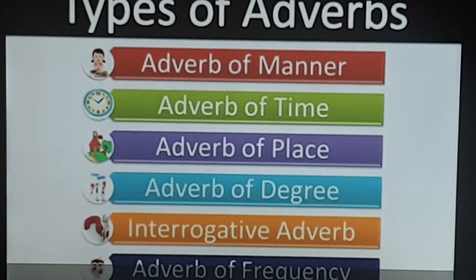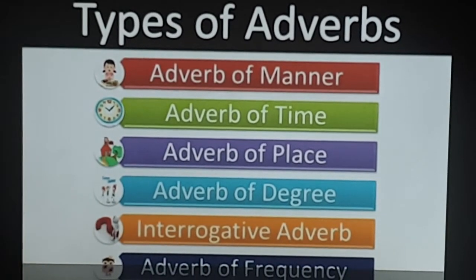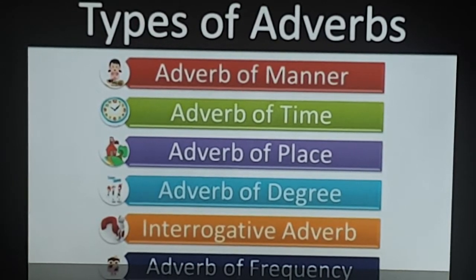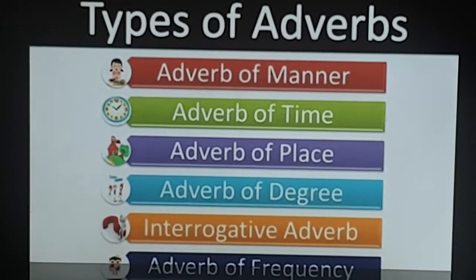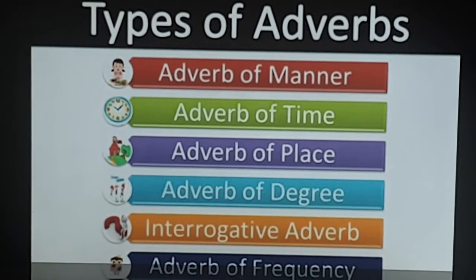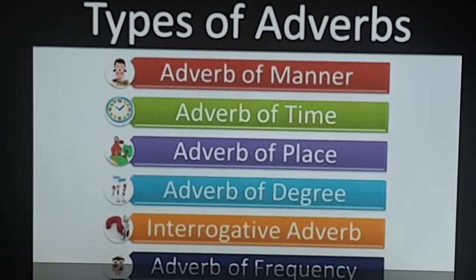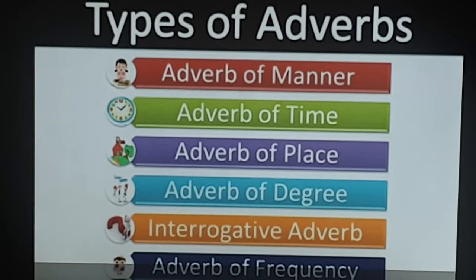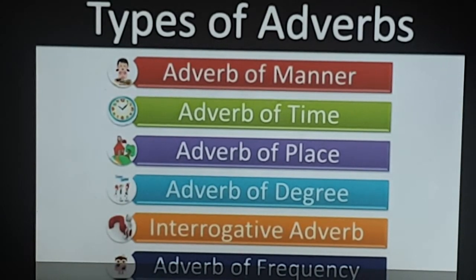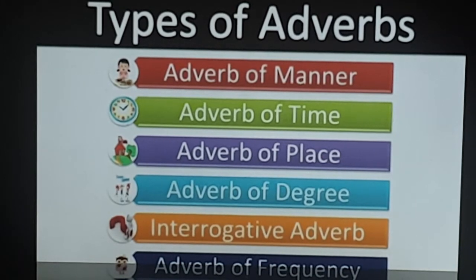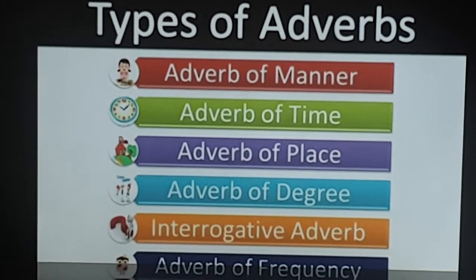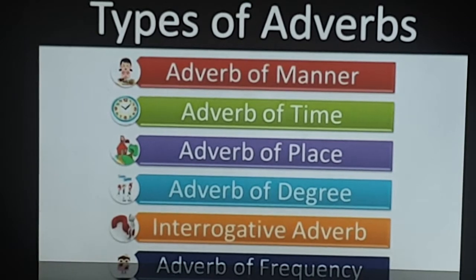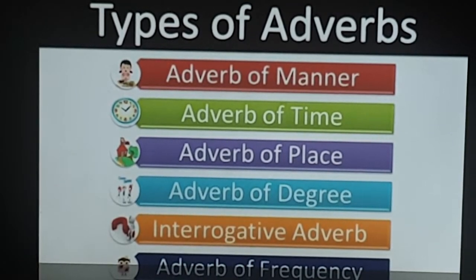Welcome again, children. Now coming on to types of adjectives — this is going to be very easy for you because we have already discussed some of it. The definition of an adverb is how an action is done, so 'how' tells us about manner — adverb of manner. 'When' an action is done tells us about adverb of time. 'Where' an action is done tells us about adverb of place. When it describes an adjective or another adverb, that tells us about adverb of degree.